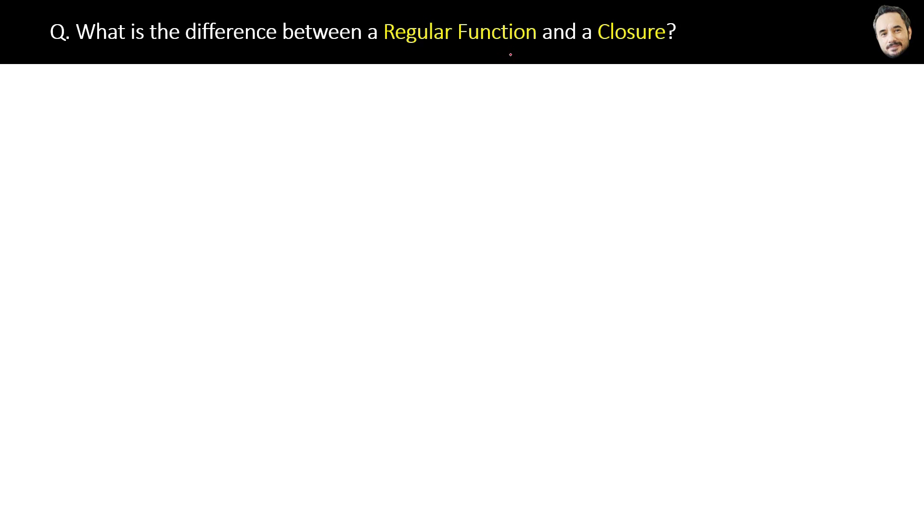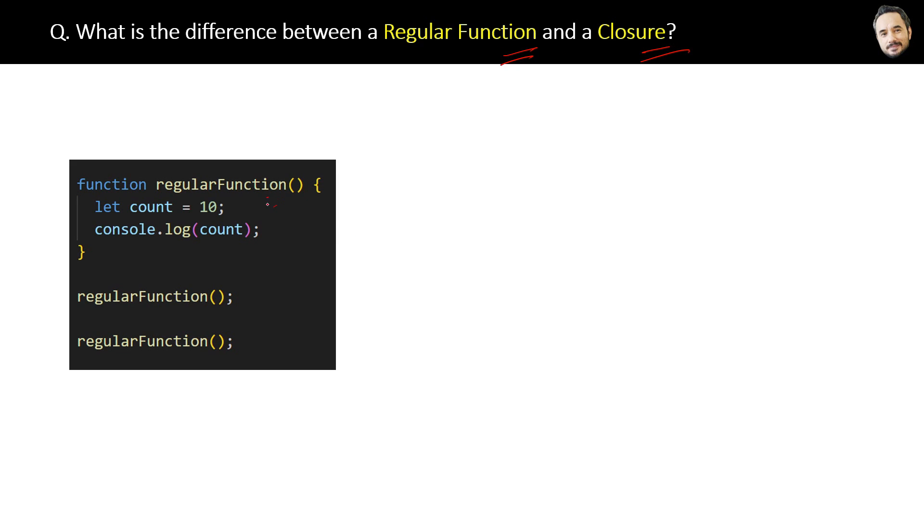What is the difference between a regular function and a closure? Here is the code for the regular function. As you can see, we are calling the regular function first and it will give the output 10. Then we are calling the regular function again, and it will again log the value 10 only.